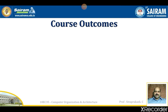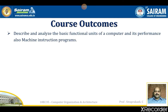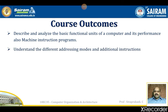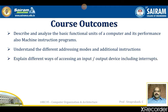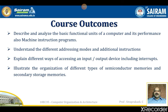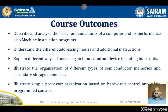Now let us discuss about the course outcomes of this particular course. As per the university guidelines, I formulated five outcomes. CO1: Describe and analyze the basic functional units of a computer and its performance, also machine instruction programs. CO2: Understand the different addressing modes and additional instructions. CO3: Explain different ways of accessing an input-output device including interrupts. CO4: Illustrate the organization of different types of semiconductor memories and secondary storage memories. CO5: Illustrate simple processor organizations based on hardwired control and micro-program controls.